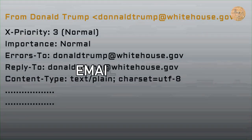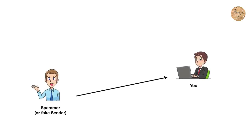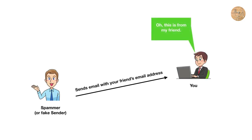We call this email forging or email spoofing, where a person can pretend to be some other person and send you an email. All this happens without the spammer gaining access into your friend's account. Your friend's account is safe, but still you will get an email appearing to be from your friend's account, even though it is sent by some other person who is pretending to be your friend.